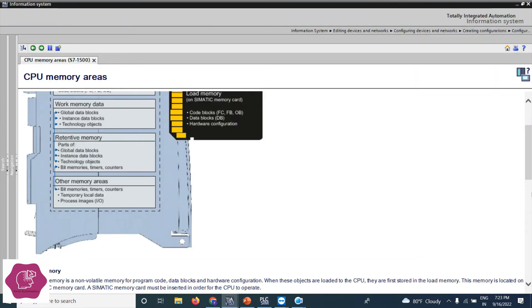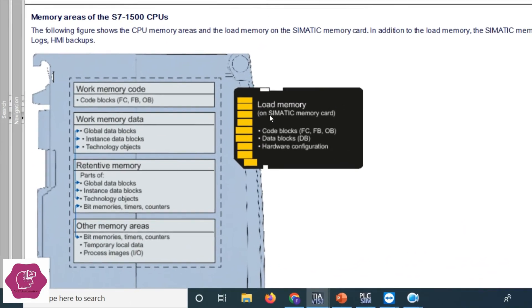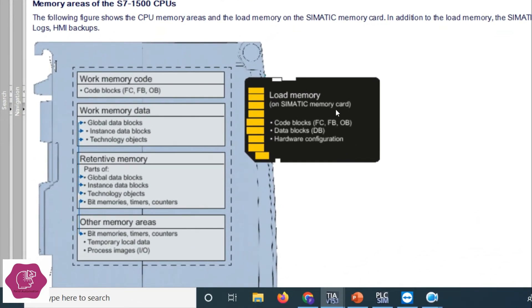Load memory is on the SIMATIC memory card. When the CPU first starts from stop, it loads the data in the load memory area. The type of data stored includes: function blocks (FB), function calls (FC), organization blocks (OB), data blocks (DB), and hardware configuration. That data is stored in the SIMATIC memory card as load memory.